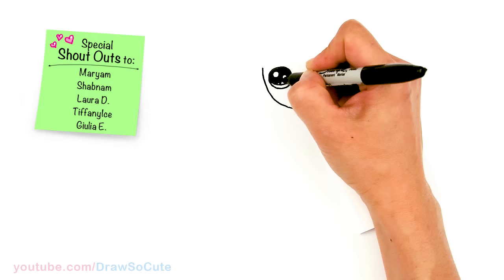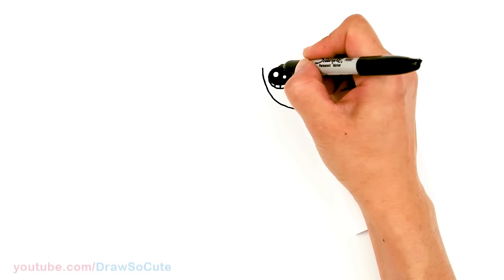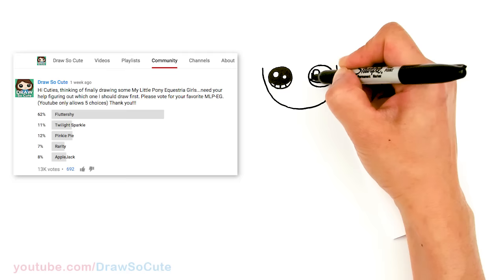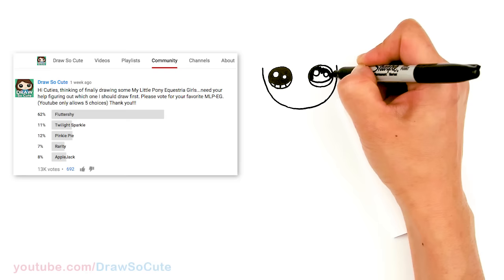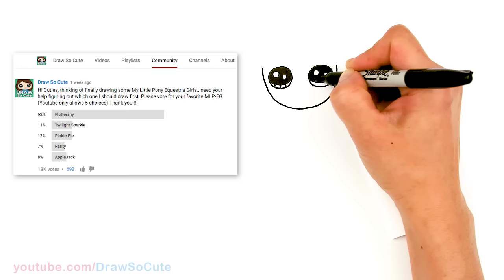And the lines at the bottom. Same thing on this side. I want to thank you guys for voting on my community page and letting me know which MLP Equestria girl you wanted me to draw. Fluttershy won by a landslide, and I was so happy she did because she's actually my favorite — I just love the colors on her.